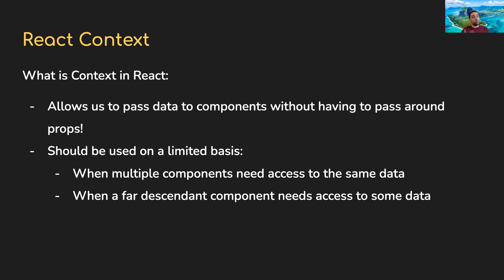Hopefully we're all comfortable with props at this point. The idea is a parent component has some data, the child component needs that data. When we render the child component, we add additional props and pass the values we wish down to the child component. That's our usual flow of data from parent to child.